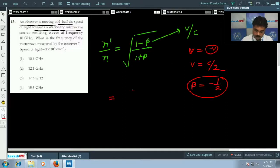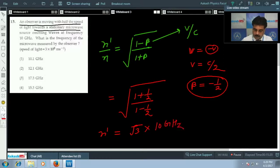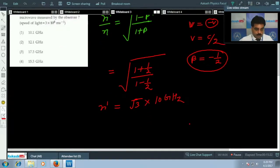Now putting the given values: 1 minus minus half upon 1 minus half. Minus minus will convert into plus half. So that will give you root 3 times the actual frequency, which is 10 gigahertz. On solving you will get 17.3 gigahertz. So option third will be correct.